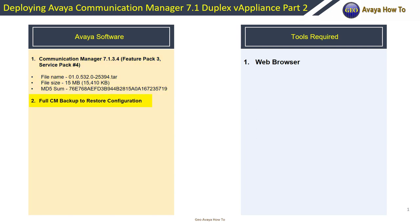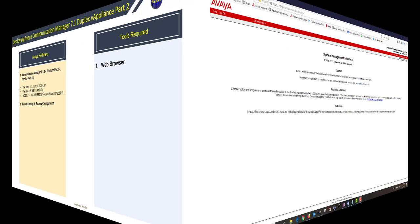Then we're going to restore its configuration from backup. The software required for this upgrade is Communication Manager Feature Pack 3, Service Pack 4. To restore the Communication Manager configuration we will need the latest backup of your Communication Manager. The only tool required for this upgrade and restoration of the CM configs is a web browser.